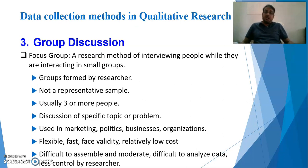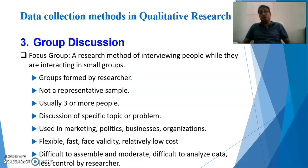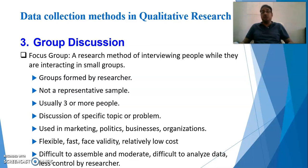The third method is group discussion — also called focus group discussion. It is a research method of interviewing people while they are interacting in small groups, with a minimum of around 10 people. The groups are formed by the researcher, who decides who the participants will be. This is not a representative sample, and the discussion should be focused on a specific topic or problem relevant to the research question.